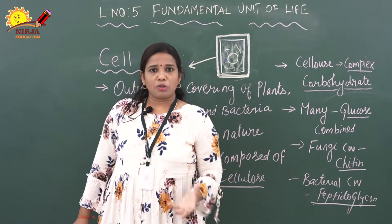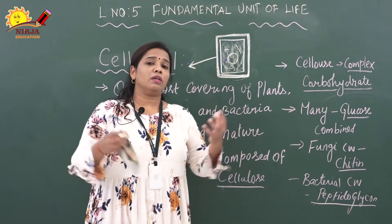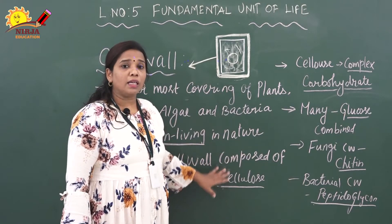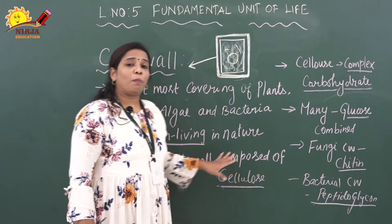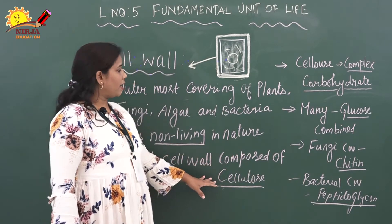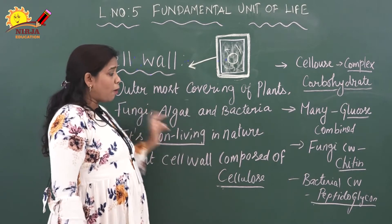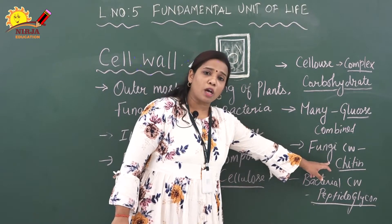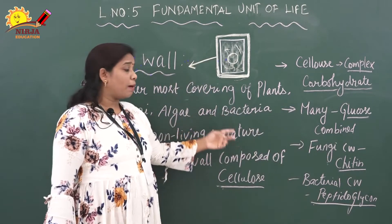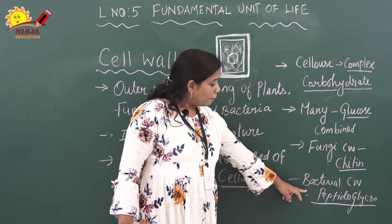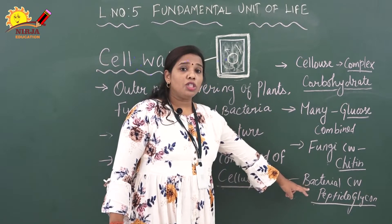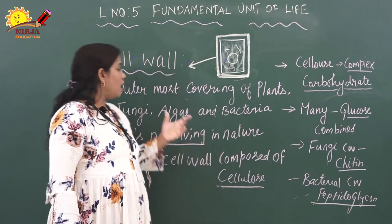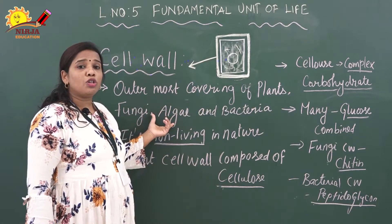Glucose is a simple sugar — a simple carbohydrate. Many glucose molecules combine to make cellulose, which is why cellulose is called a complex carbohydrate. The plant cell wall is made up of cellulose. The fungal cell wall is made up of chitin (C-H-I-T-I-N), which is also a complex carbohydrate. The bacterial cell wall is made up of peptidoglycan (P-E-P-T-I-D-O-G-L-Y-C-O-N), also a complex carbohydrate. Algae and plants share cellulose in their cell walls.